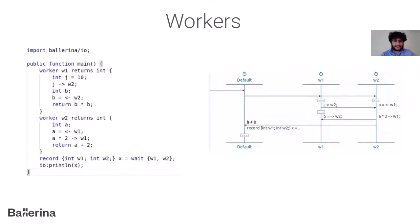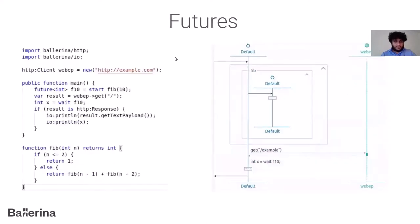If the compiler finds the interactions are not compatible, it gives a compiler error saying it should be fixed. From the sequence diagram view you can clearly see how message interactions are done with multiple workers executing in parallel. We also support futures — you can take any function and make it run asynchronously using the 'start' keyword, which returns a future construct representing the value you'll get. You can later 'wait' on the future to finish the asynchronous operation and retrieve the value.